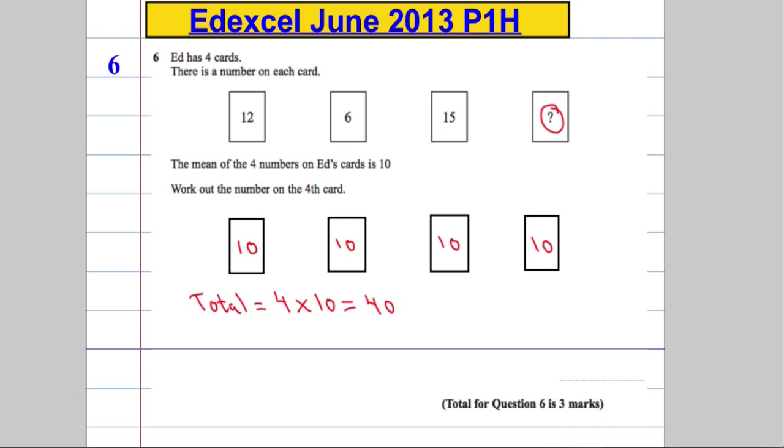I want to work out what's on the missing card here. So we're going to get that by doing 40 and we're going to take away all of these guys added up together. So 12 plus 6 plus 15, we're going to add them up and then we're going to take them away from that 40.